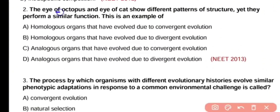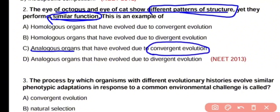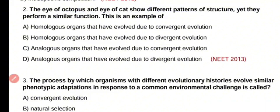Question number 2. The eye of octopus and eye of cat show different patterns of structure, yet they perform a similar function. Organs which are structurally different but functionally similar are called analogous organs, and analogous organs are associated with convergent evolution. The correct answer is option C. The eye of octopus and eye of cat are examples of analogous organs.